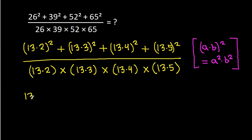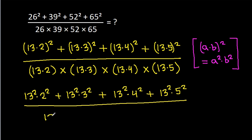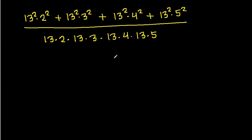So this will be 13 squared times 2 squared, times 13 squared times 3 squared, times 13 squared times 4 squared, times 13 squared times 5 squared. And here we can take 13 squared common, giving us 2 squared times 3 squared times 4 squared times 5 squared.